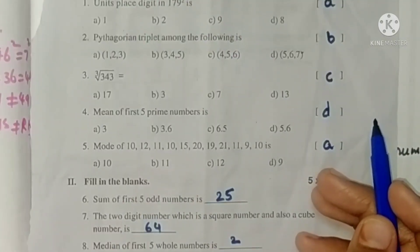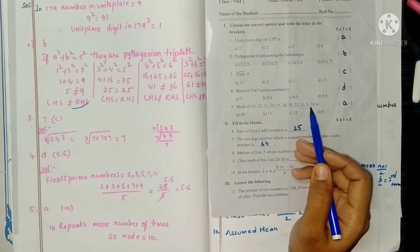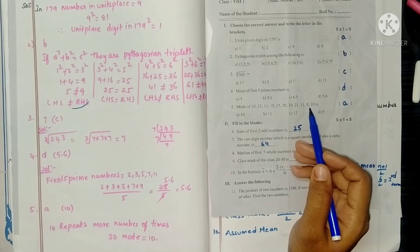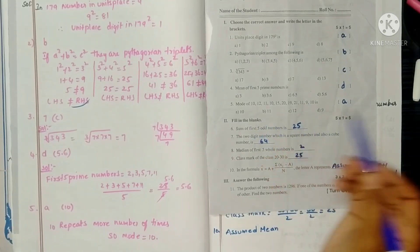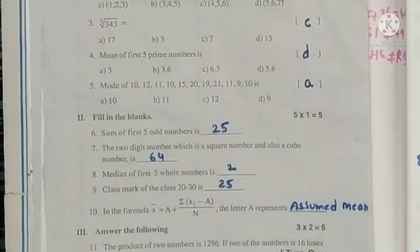Next, fifth one. Mode of this data. Mode means which value repeats most times. Here 10 repeats. So the correct one is option A.